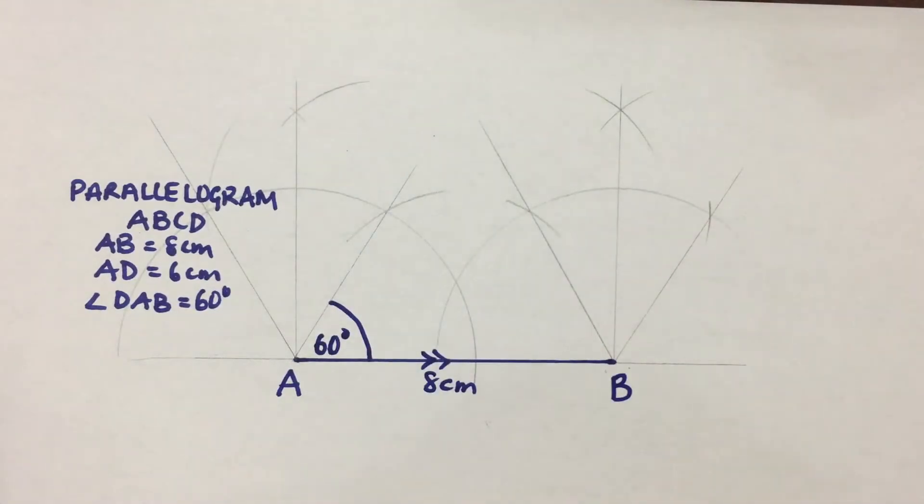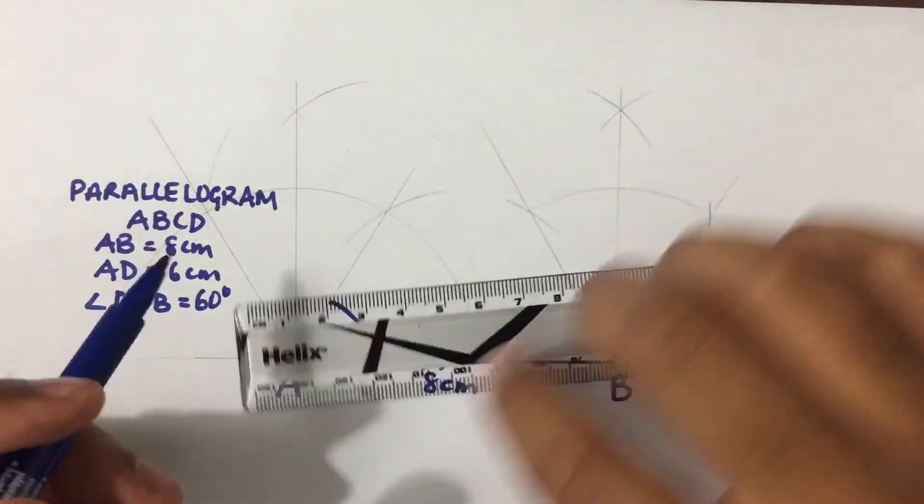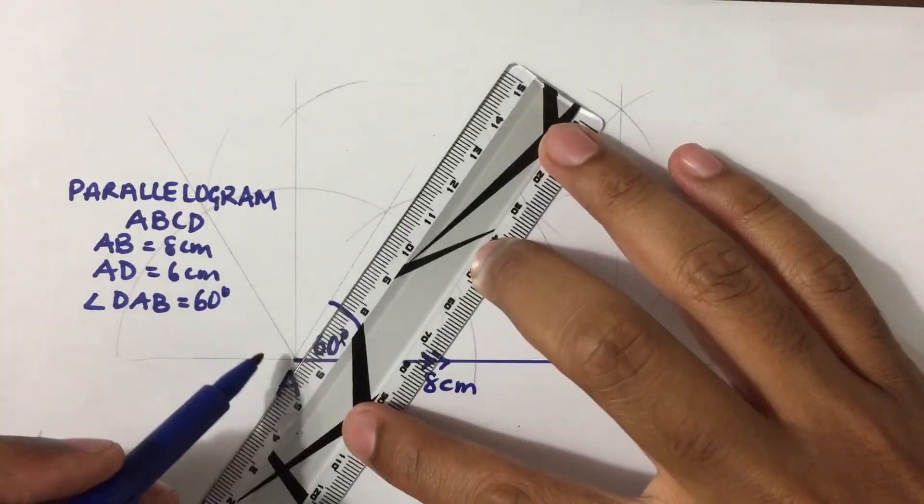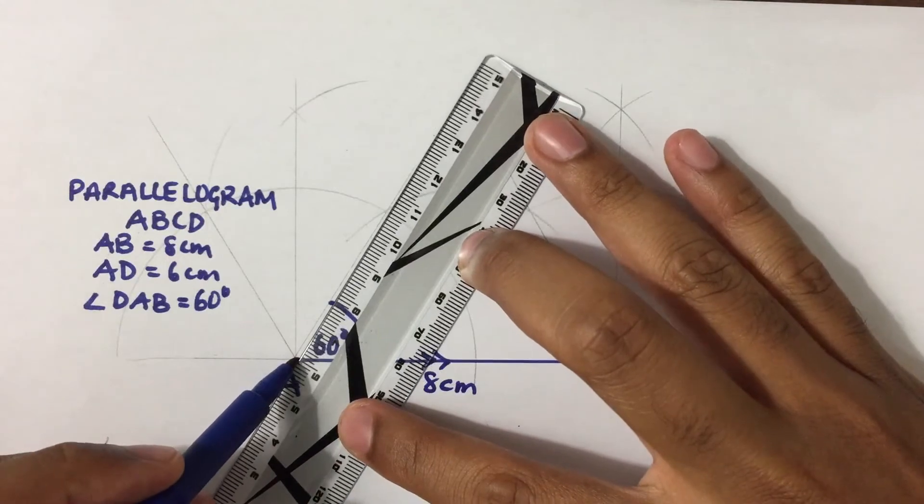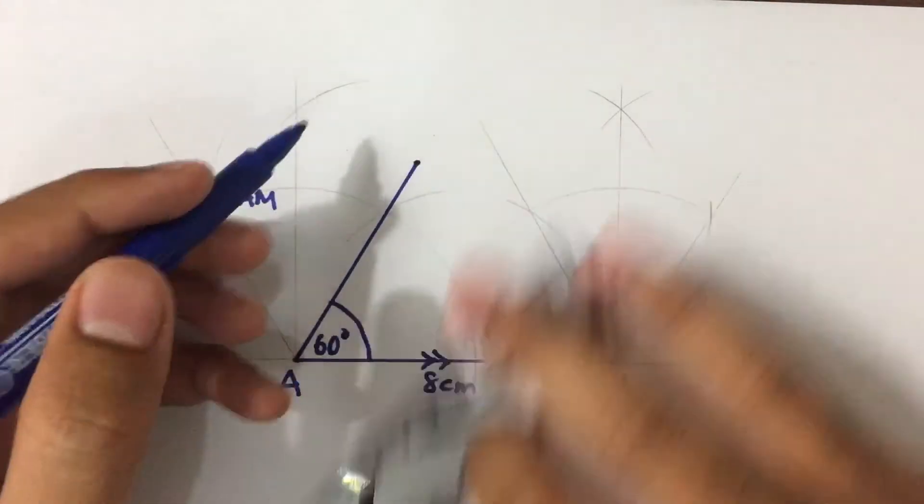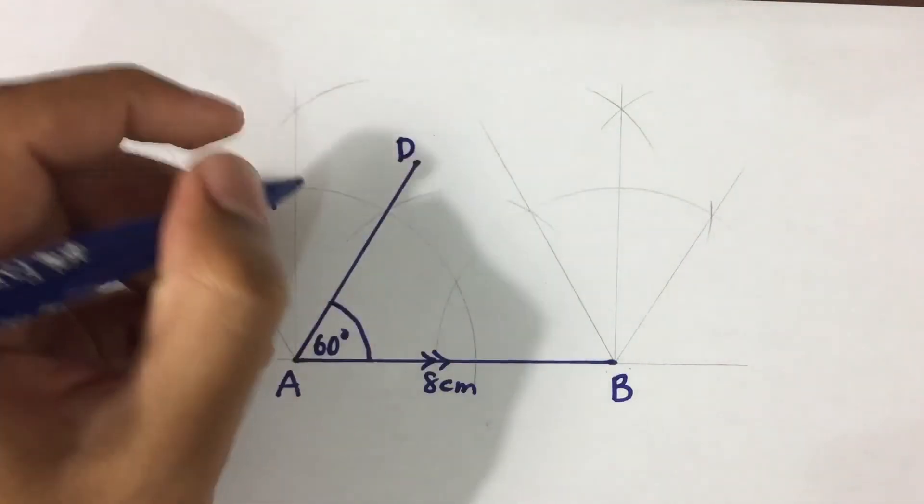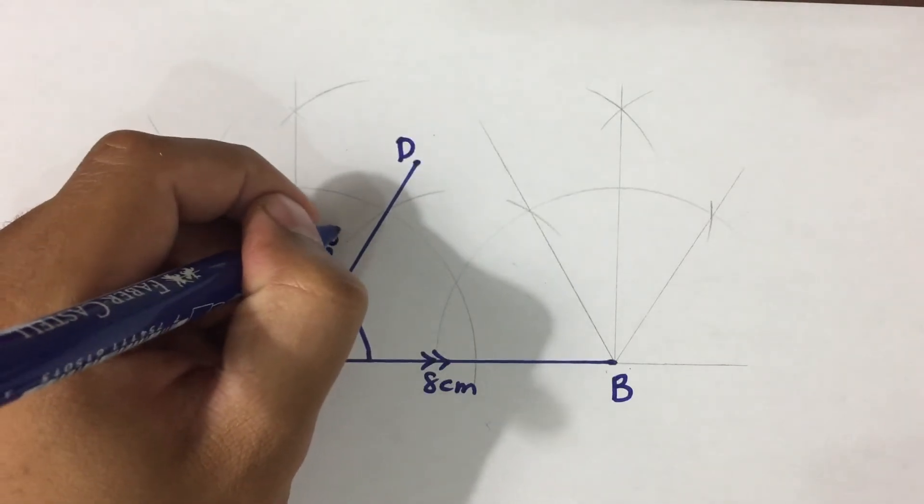Good. And then they tell us that AD is 6 centimeters. So this here is D. And this here would be 6 centimeters.